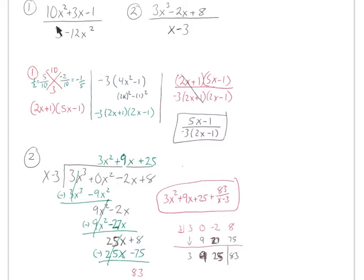This one we know is going to be factor-cancel. To factor the top, I use this method: multiply front and back, put that down at the bottom. What two numbers multiply to get that and add to get this? Divide by the front number, reduce. Remember, the 2 goes in front and the 1 stays back. The negative 1 stays and the 5 goes to the front. That's your numerator.